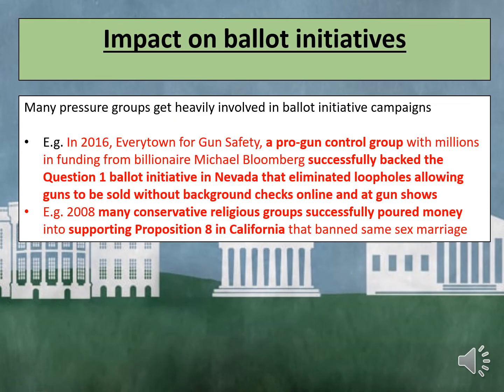Many pressure groups get heavily involved in ballot initiative campaigns. For example, in 2016, Everytown for Gun Safety — a pro-gun control group with millions in funding from billionaire Michael Bloomberg — successfully backed the Question 1 ballot initiative in Nevada, which eliminated loopholes allowing guns to be sold without background checks online and at gun shows. Another example is from 2008, when many conservative religious groups successfully poured money into supporting Proposition 8 in California, which banned same-sex marriage.